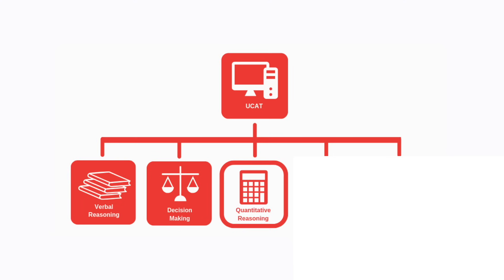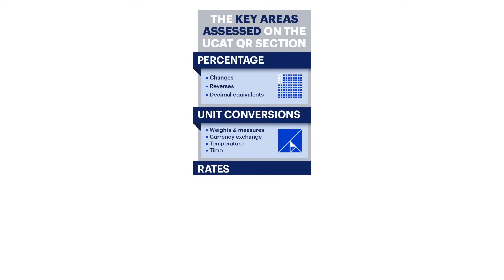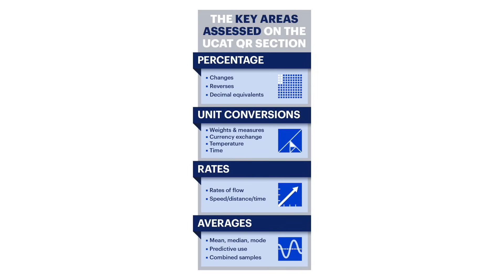Quantitative reasoning is the numerical element, covering arithmetic, percentages, fractions, speed-distance-time, budgeting, and more. Last year they increased the time for this section by borrowing a minute from abstract reasoning — so you get one extra minute, which adds up to vital extra seconds per question. Before the section starts, use the whiteboard to write down key equations to get your mind churning and into the rhythm of what's about to come.